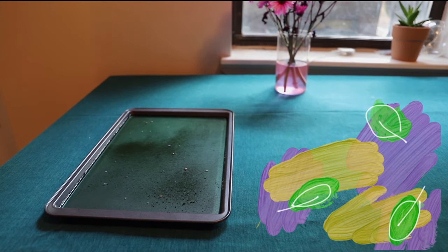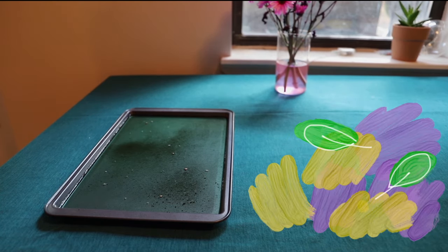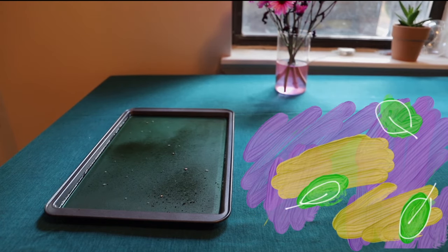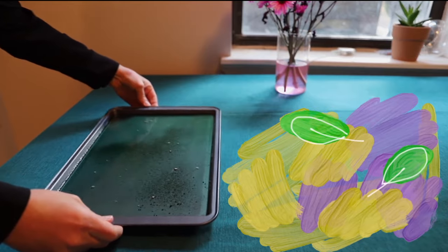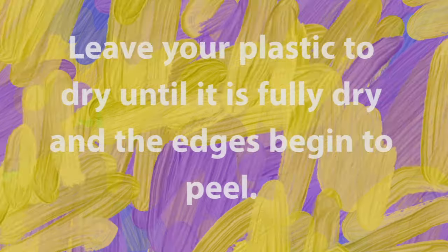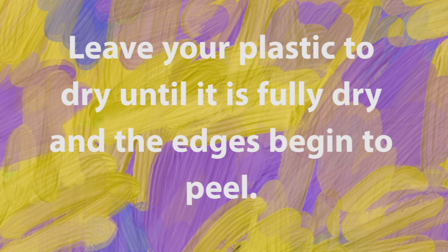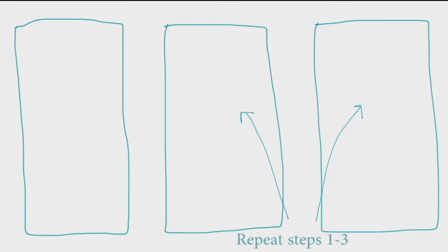Once the mixture cools, it will form a gel similar to Jell-O. We want all the water to evaporate from our plastic. So once your mixture cools, you should move it to a place where it can dry with proper air circulation. To create a full bag, we'll need to make two more bioplastic sheets. So after you pour your plastic, you should repeat steps one through three to create two more plastic sheets.